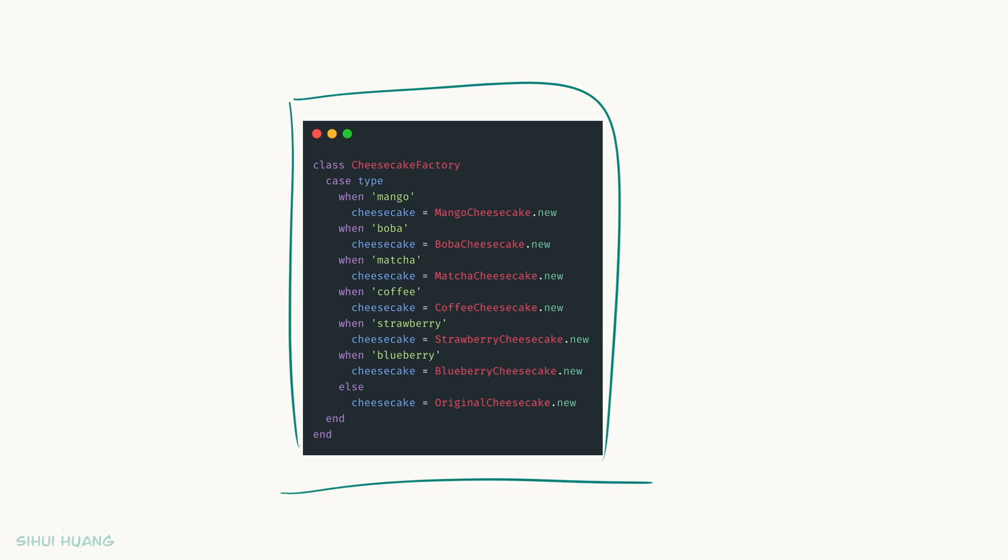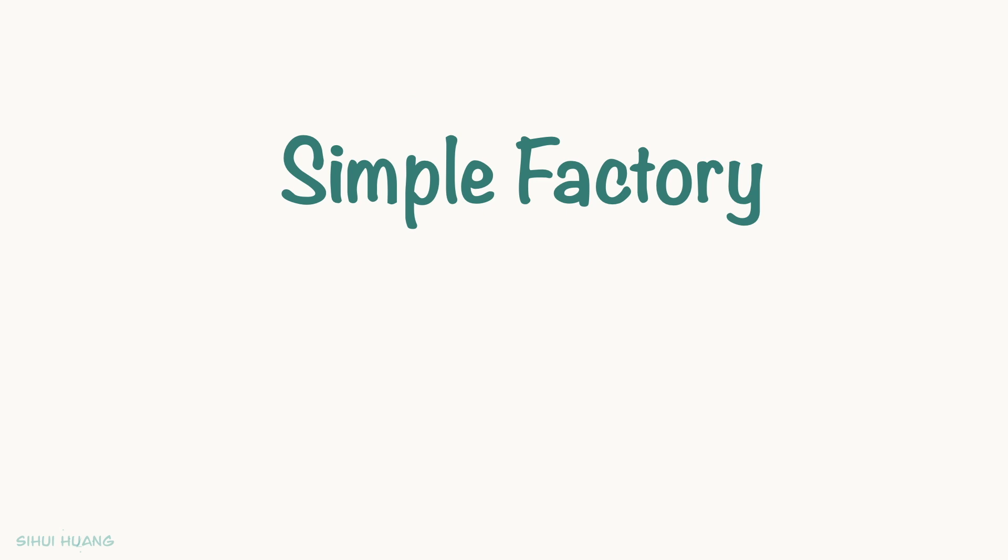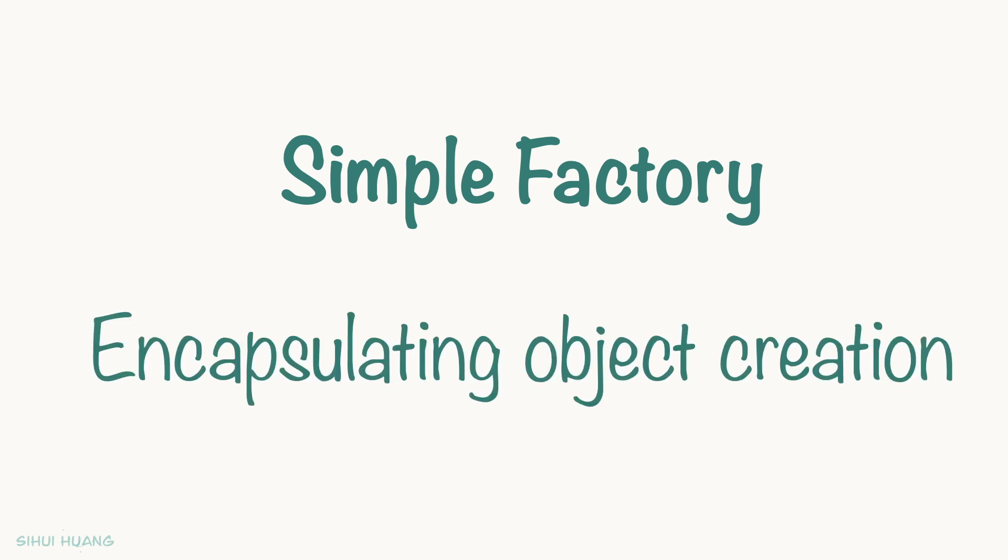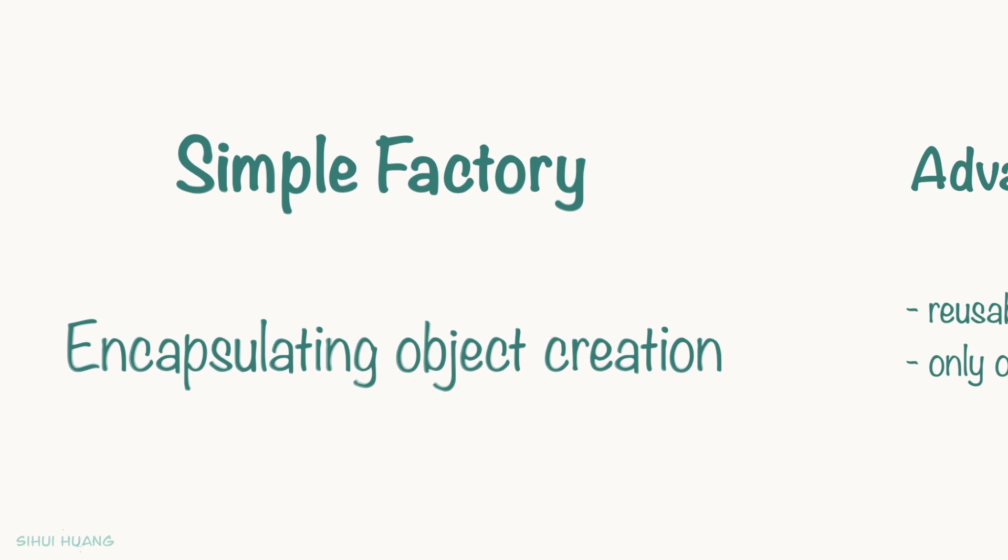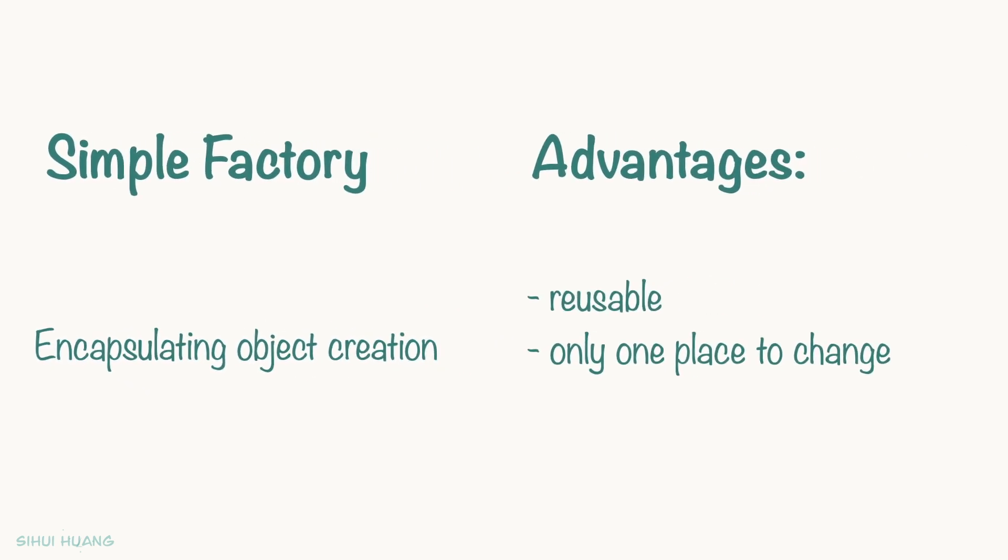What we just went over is an example of simple factory. The idea behind it is to encapsulate object creation. There are some advantages of it. First of all, it's reusable. If we need to create the right type of cake for some other reasons, we can reuse the Cheesecake Factory class. And that class is the only class we need to change if we need to make any updates about how to select the right type of cake, like introducing new flavors or removing existing flavors, for example.